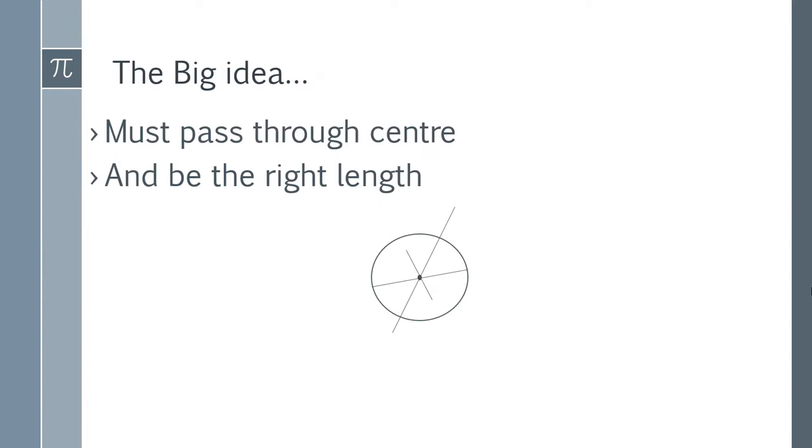That's not sufficient. Must pass through the center is one criteria and it also has to be the right length. So all of these lines pass through the center but this one isn't a diameter because it's too short. This one's too long to be a diameter. Whereas this one is just right.